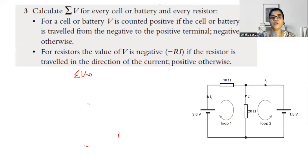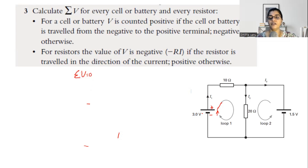How can we do this? For each cell or battery with voltage V, it is counted positive if you travel from the negative to the positive terminal. While traveling through the loop, if I go from the negative of the battery to the positive of the battery, the battery voltage is positive. If I go from the positive to the negative, the battery voltage is negative. Which terminal do you end up with — that determines the sign of the battery voltage.